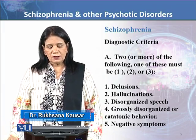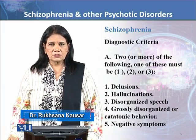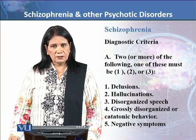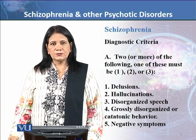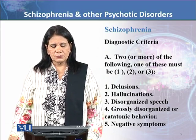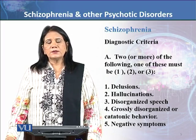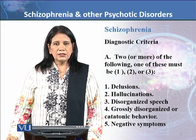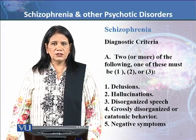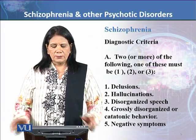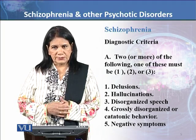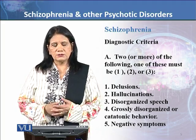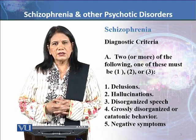First of all, we will talk about schizophrenia. Schizophrenia is a very common disorder in psychiatry. When we diagnose this, there are basically two types of symptoms: positive symptoms and negative symptoms. Positive symptoms are those that are adding to normal behavior — they are behaviors that do not exist in a normal individual. Examples include delusions, hallucinations, and disorganized speech.